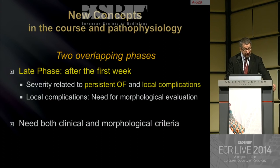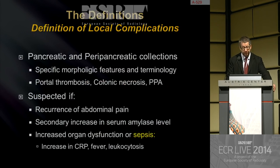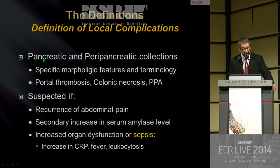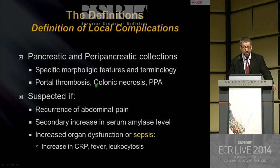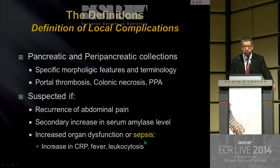At the late phase, there is a need for both clinical and morphological criteria. Local complications are more or less the presence of pancreatic and peripancreatic collections, and we now have specific terminology for those morphologic features. Other complications are possible, including portal thrombosis, colonic necrosis, or pancreatic pseudoaneurysm. Local complications should be suspected in case of recurrence of abdominal pain, secondary increase in serum amylase, increased organ dysfunction, or increase in CRP, fever, or leukocytosis related to a sepsis condition.